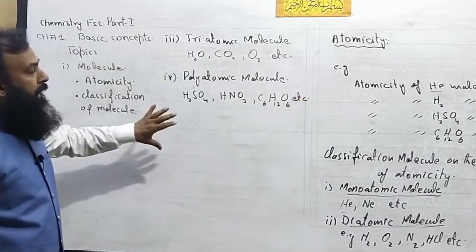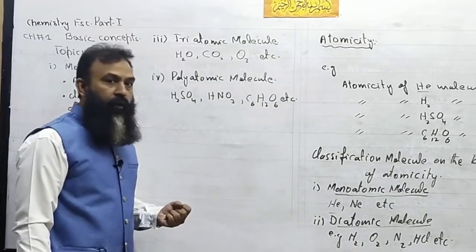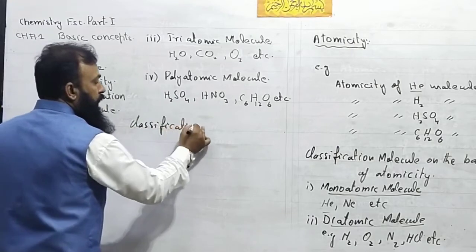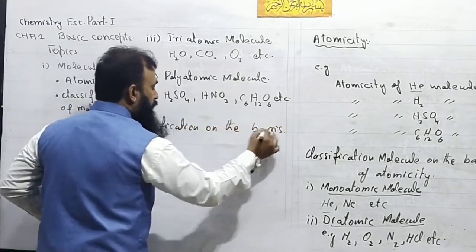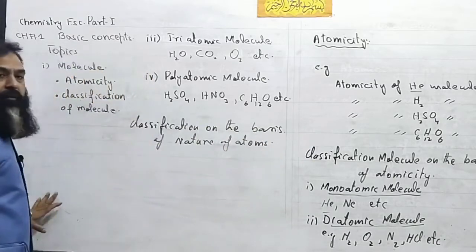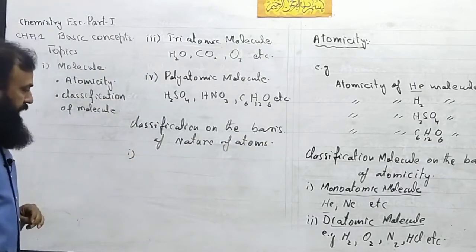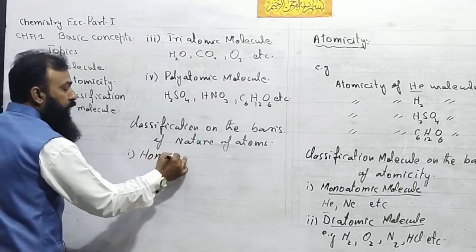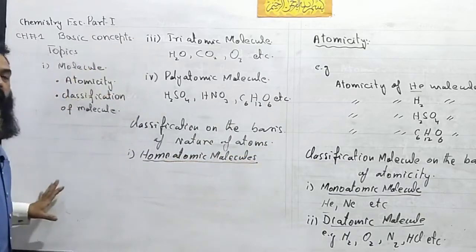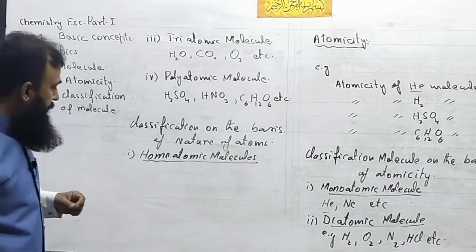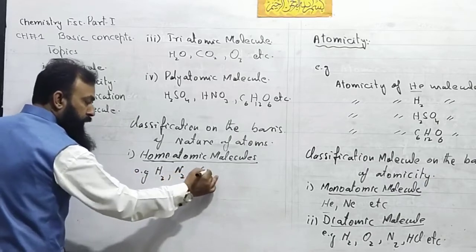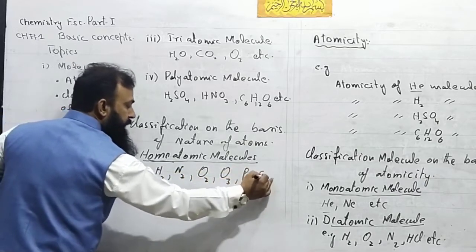We can also classify molecules in another way: on the basis of the nature of combining atoms. The first class is homoatomic molecules — also called homonuclear molecules. 'Homo' means same, meaning the molecule consists of the same kind of atoms. For example: hydrogen (H₂), nitrogen (N₂), oxygen (O₂), ozone (O₃), phosphorus, sulfur, etc.